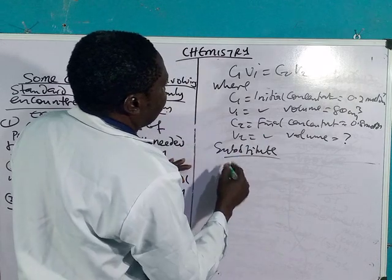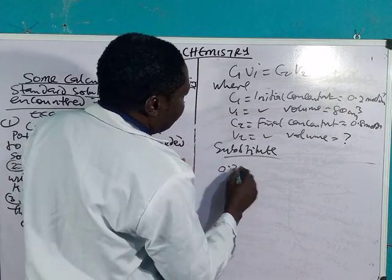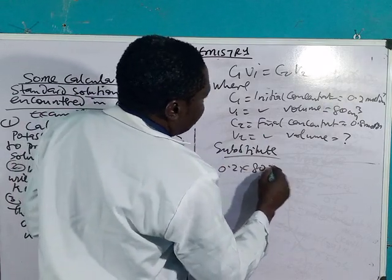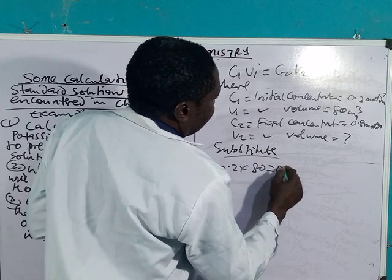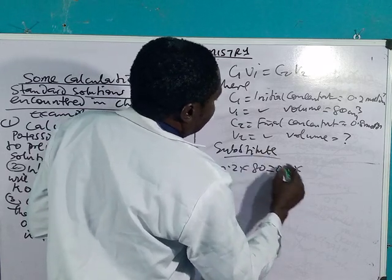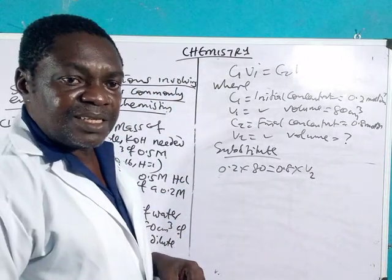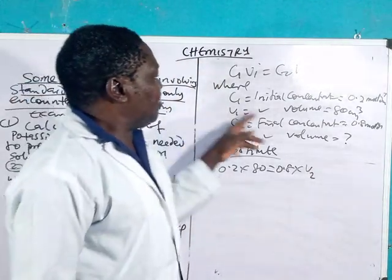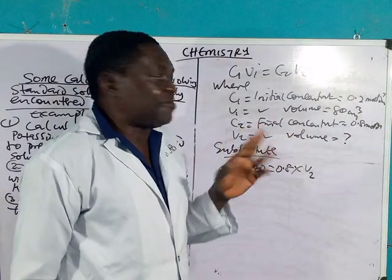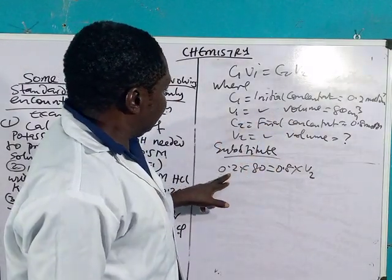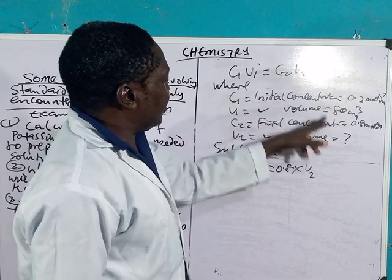Then you go into the expression: C₁ is 0.2 times V₁, which is 80, equals C₂, 0.08, times V₂. Remember, in all the examination bodies, as far as Nigeria is concerned, if you are substituting, you must be very careful. You can see C₁ is 0.2, V₁ is 80.